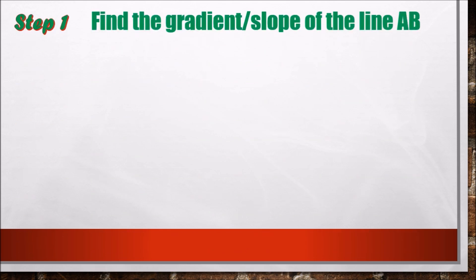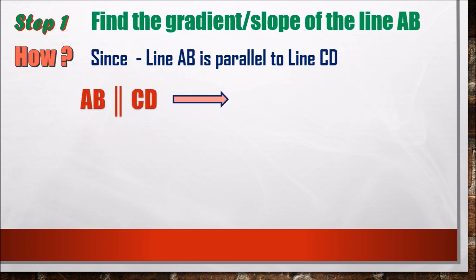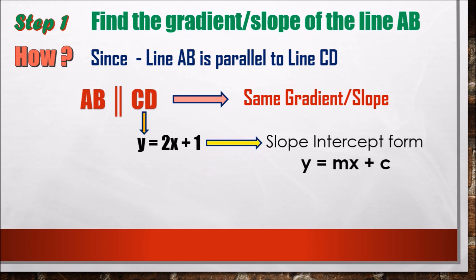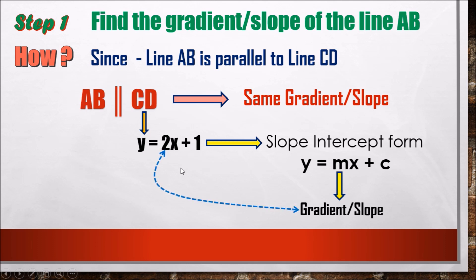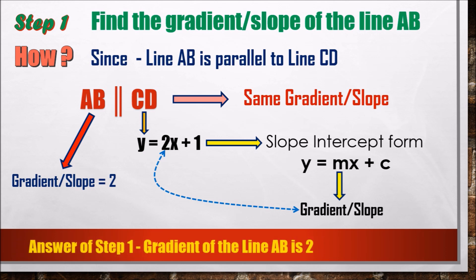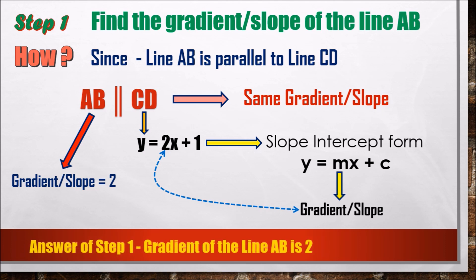Step 1: find the gradient or slope of line AB. Since line AB is parallel to line CD, and two parallel lines have the same gradient, we look at line CD. The equation of line CD is y = 2x + 1, written in slope-intercept form y = mx + c, where m is the gradient. So the gradient of line CD is 2, which means the gradient of line AB is also 2, because parallel lines share the same gradient.